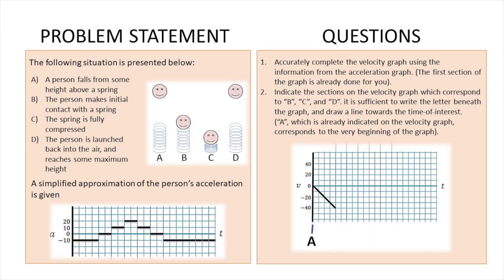So you have the following situation: a person falling from some height above a spring, then the person makes contact with the spring, then the spring is fully compressed, and then the person is launched back into the air — some sort of trampoline type of problem. We're given a simplified approximation of the person's acceleration. We have to first accurately complete the velocity graph using the information from the acceleration graph. The first section is already done for you, and part b asks us to indicate the sections on the velocity graph corresponding to points b, c, and d.